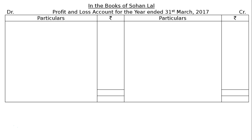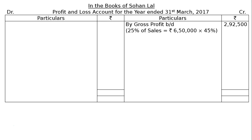Gross profit was 45% of sales, which amounted to rupees 6,55,000. On the credit side, the first line is 'By Gross Profit b/d.' Note: it is 45% of sales — not 25% as mistakenly written — which equals rupees 2,92,500. Please take out the incomes and write them on the credit side of the Profit and Loss Account.